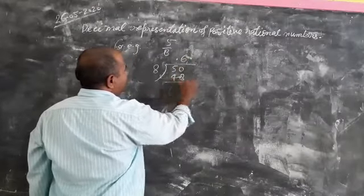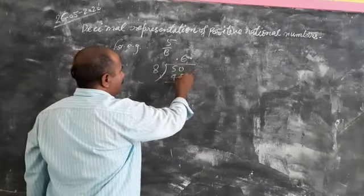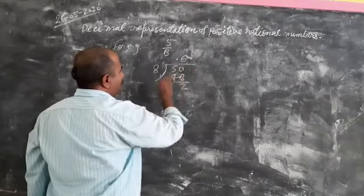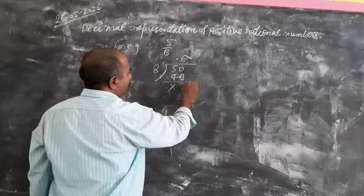Now subtract this number. So 10 minus 8 is equal to 2, and 4 minus 4, nothing. Now increase one more 0 here.